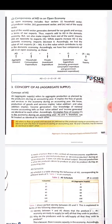Next is the aggregate supply schedule — a table showing the behavior of aggregate supply in response to different levels of income. Table 2 clearly explains the relationship: when income level is 0, aggregate supply is also 0; when income is 20, aggregate supply is also 20; when income is 60, aggregate supply is also 60. This shows a perfect identity between aggregate supply and income.